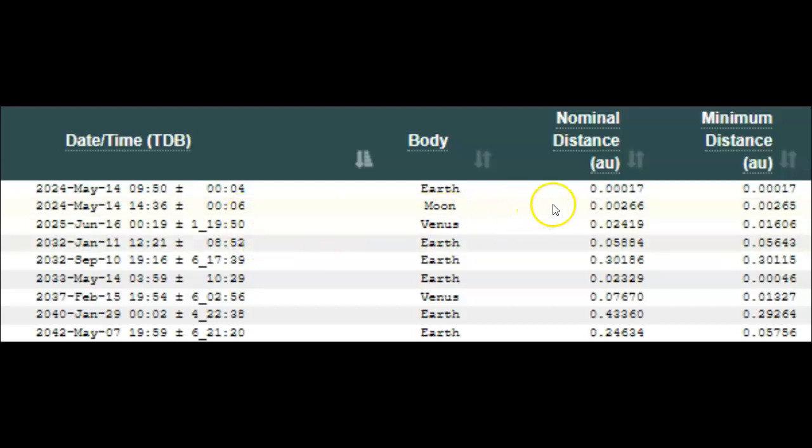Very strange. The actual nominal and minimal distance here is 0.00017. If we take into account the radius of Earth, this rock's going to pass just over 10,000 miles away from the surface of our planet. Now, that's with a little luck, as the condition code is seven.